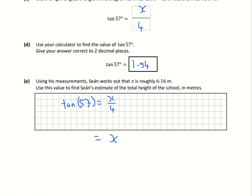Because it's being divided there, we're going to multiply it on the other side. So all we have to do is 4 multiplied by tan 57. That'll give you your final answer, so x equals 6.16.